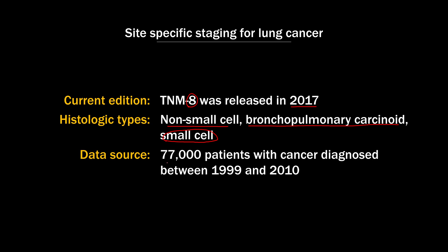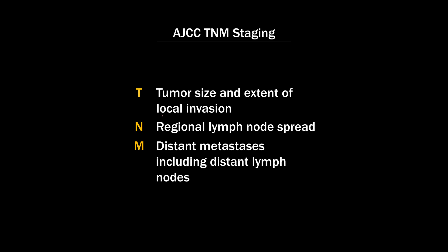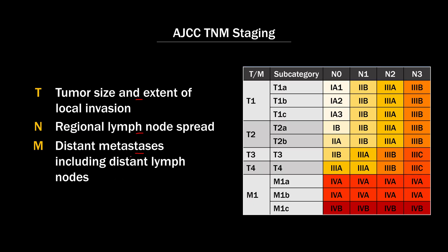The data for this staging system comes from 77,000 patients with cancer diagnosed between 1999 and 2010. TNM staging works by collecting data on tumor size and extent of local invasion, regional lymph node spread, and distant metastases, including distant lymph nodes. T, N, and M are referred to as categories, not stages. The stage is determined by combining the T, N, and M categories together and using a table to come up with a stage.